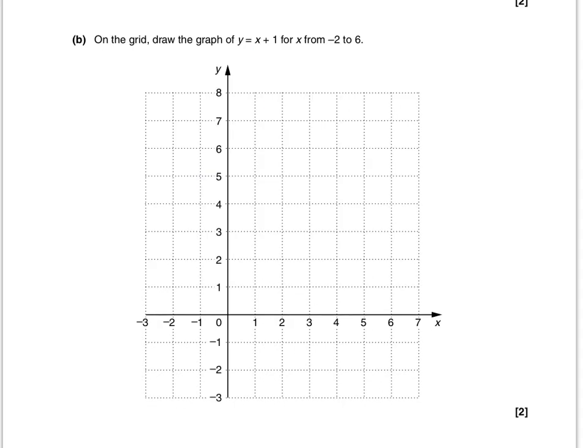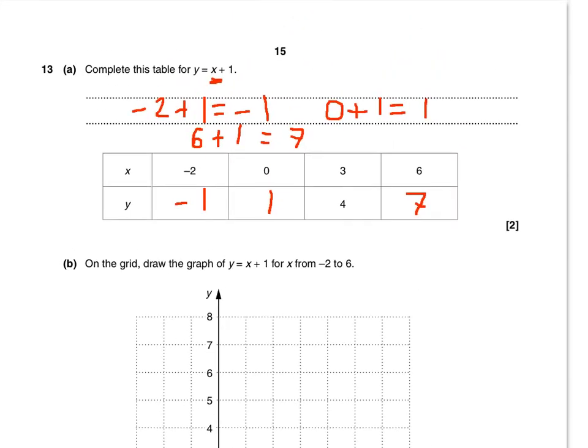Now conveniently in part a we actually found the points for y equals x plus 1. So minus 2 minus 1, that means the coordinate, the x part is minus 2, the y is minus 1.